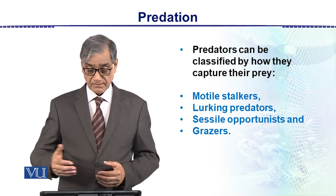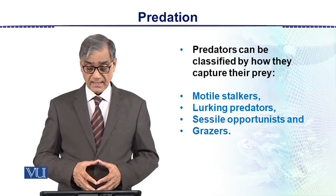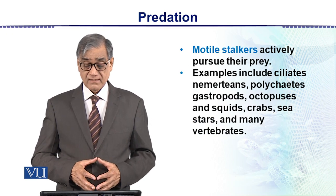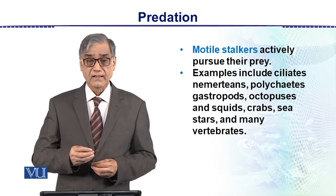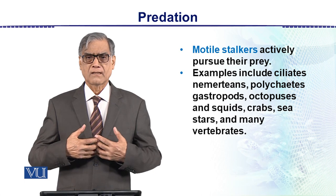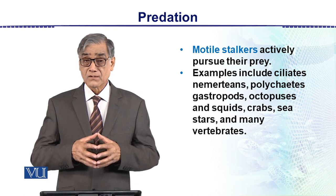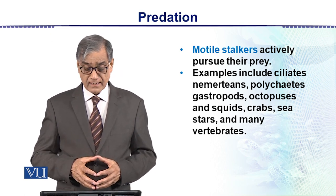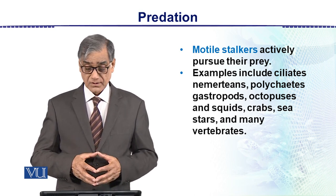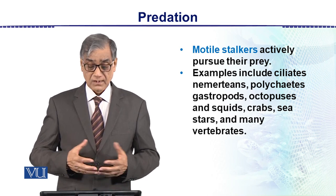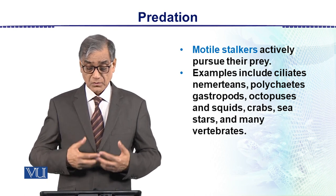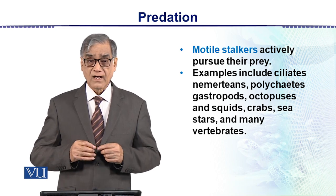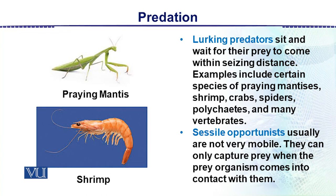The most sophisticated predators are those that actively pursue their prey — they are motile stalkers. Examples include mollusks, gastropods, arthropods, octopuses or squids, crabs, sea stars, and many vertebrates. These animals move after and run after their prey.